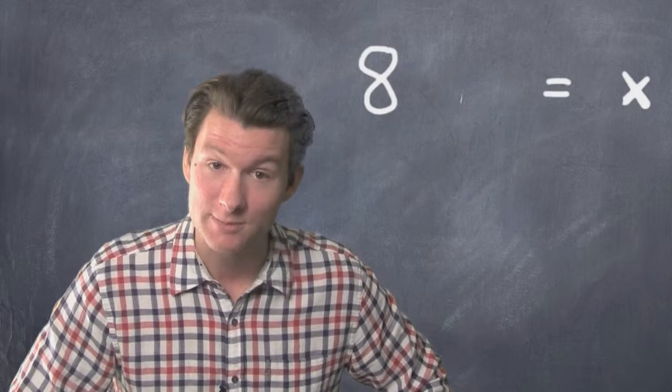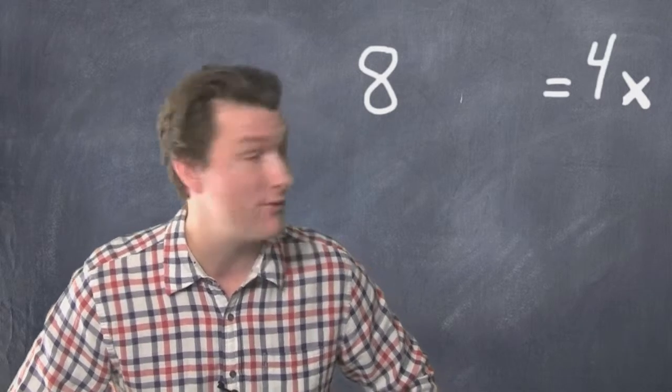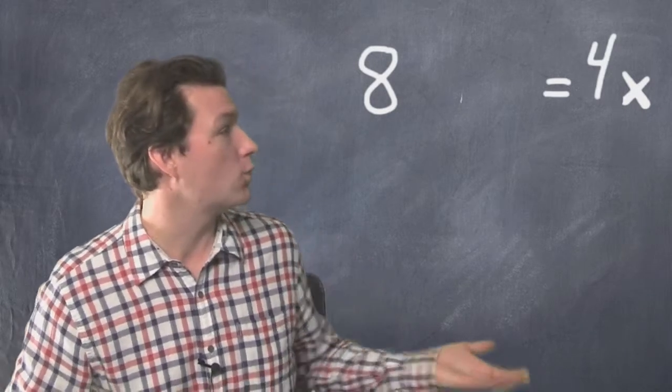We do 6x minus 2x equals 4x. We have 8 equals 4x. All right, we're almost there.